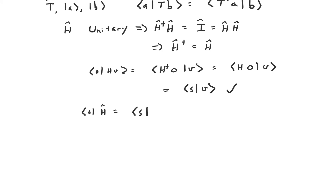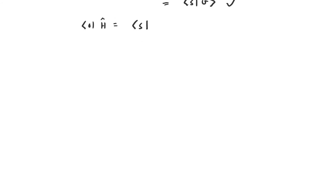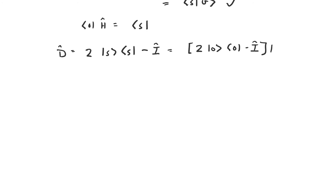This means the Grover diffusion operator — 2 times the projection onto S minus the identity operator — is the same thing as 2 times the projection onto |0⟩ minus the identity operator, preceded and followed by an application of H. This is useful because it's much more obvious how to implement this reflection about |0⟩ than it is to implement the reflection about S.